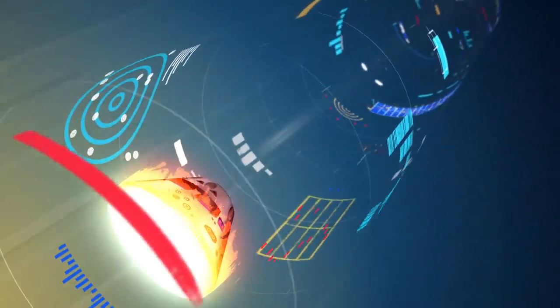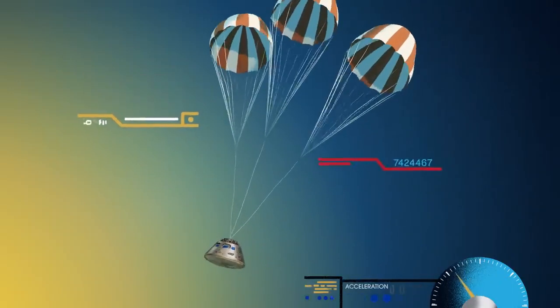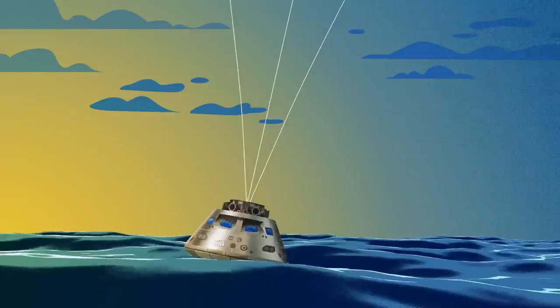With the Orion now at just 300 miles per hour, a series of parachutes uniquely tested and produced for this moment deploy, decelerating the craft to just 20 miles per hour for splashdown.